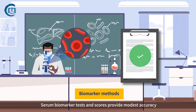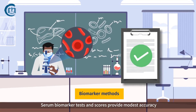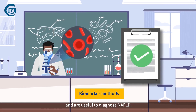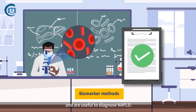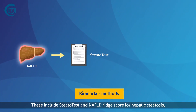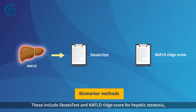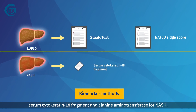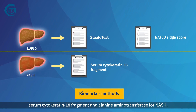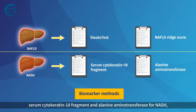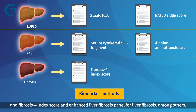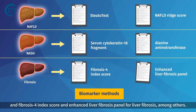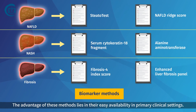Serum biomarker tests and scores provide modest accuracy and are useful to diagnose NAFLD. These include steatotest and NAFLD ridge score for hepatic steatosis, serum cytokeratin-18 fragment and alanine aminotransferase for NASH, and fibrosis index score and enhanced liver fibrosis panel for liver fibrosis, among others.